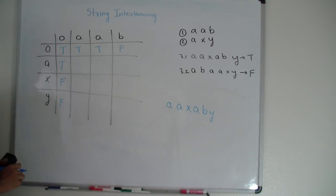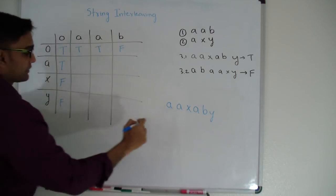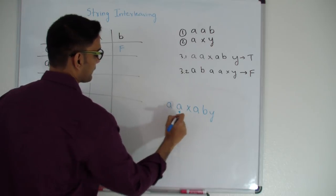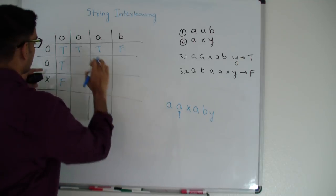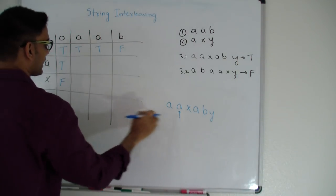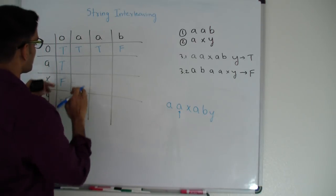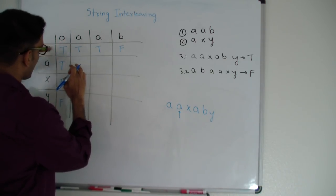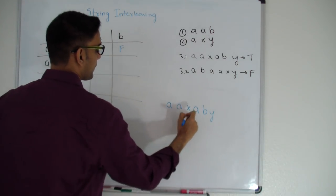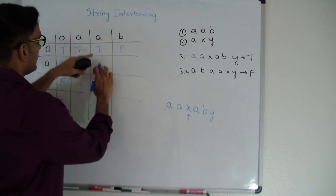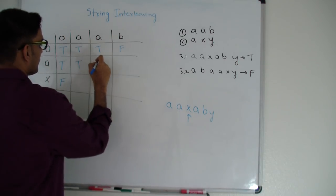Now I'll fill up the rest of my matrix. When I'm trying to fill up this cell, I have two characters to consider. I'm going to see if this character is same as either of the two options. It is actually same as both. Since this 'a' is same as this 'a', I check if the guy on top of me is true. It is true, so this is also true. Moving along — is this 'x' same as either this 'a' or this 'a'? It is not, so this is false.